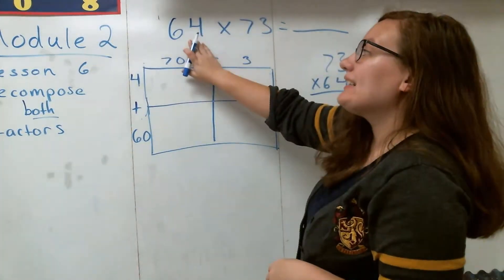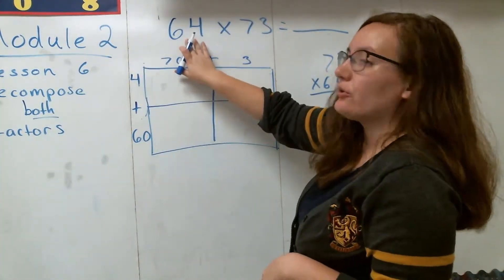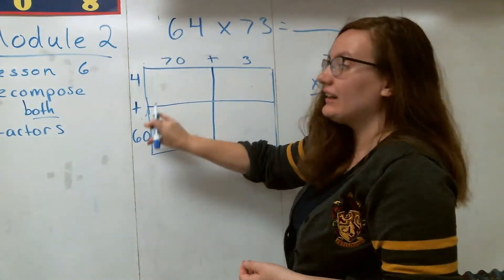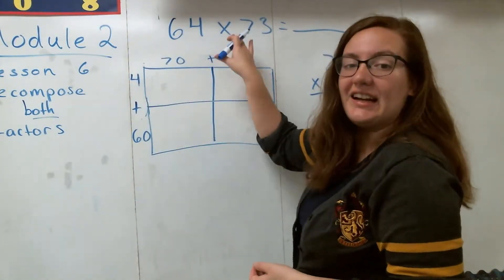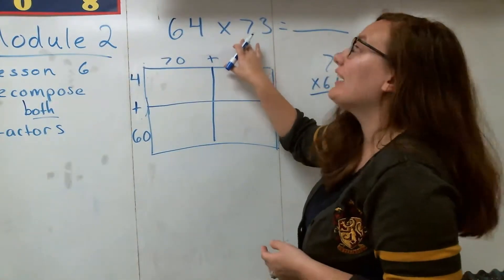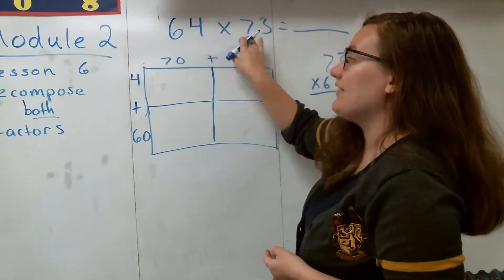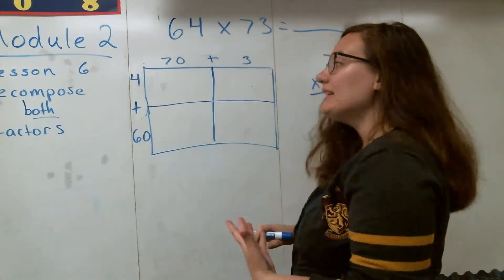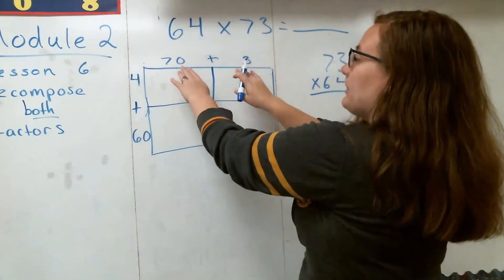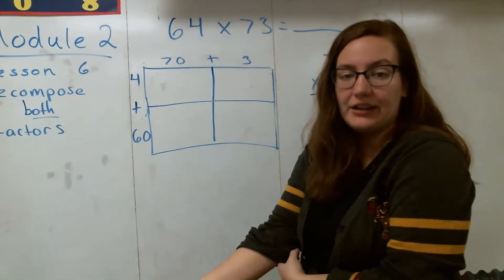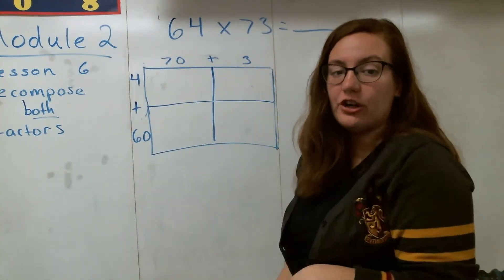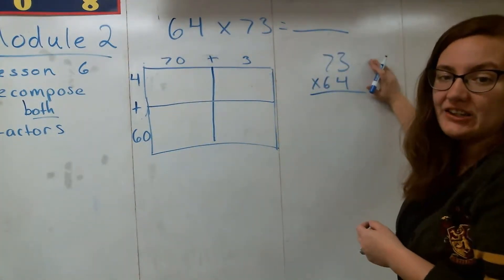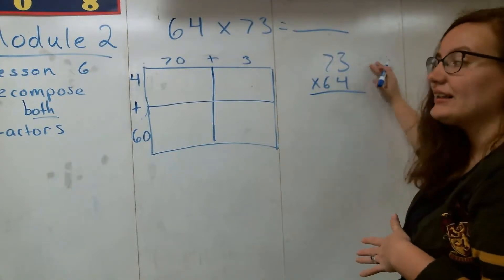To get these numbers on the side, I broke down 64 in expanded form: 6 tens, or 60, and 4 ones. Then I did the same thing for 73: 7 tens, or 70, and 3 ones. When you set up the numbers, I like to put the bigger number on top. Put the bigger number on top because usually when you do your standard algorithms, it's easier to have the bigger number on top.